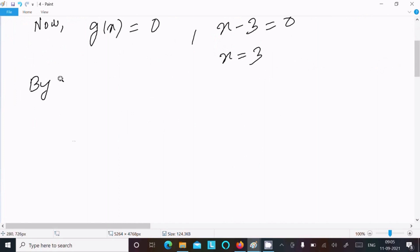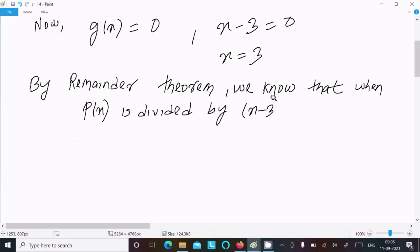By the remainder theorem, we know that when p(x) is divided by x minus 3, then the remainder is p(3).